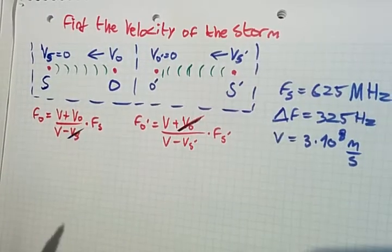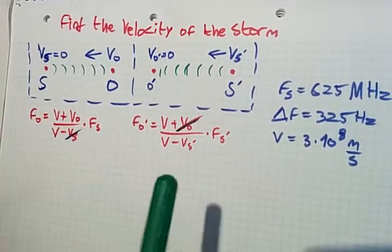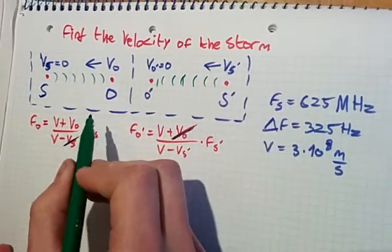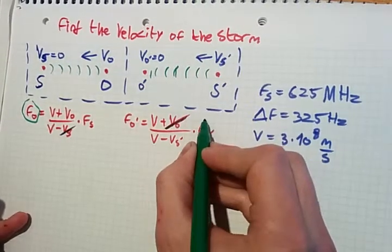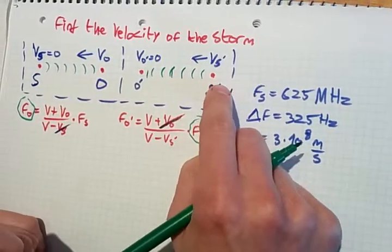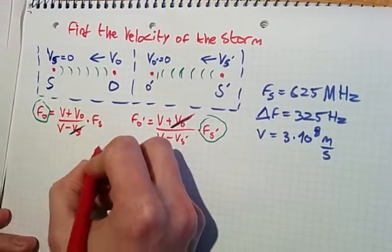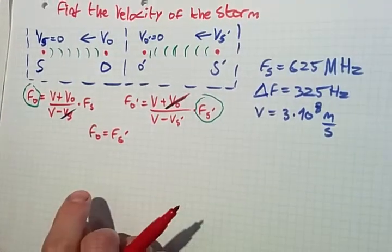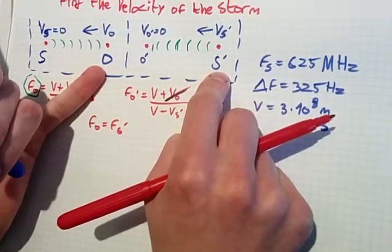The trick in these tasks is to see which values equal each other. The frequency of the observer from situation one and the frequency of the source marked from situation two are the same. So we set f_o equals f_s marked — that's the key trick for solving this problem.